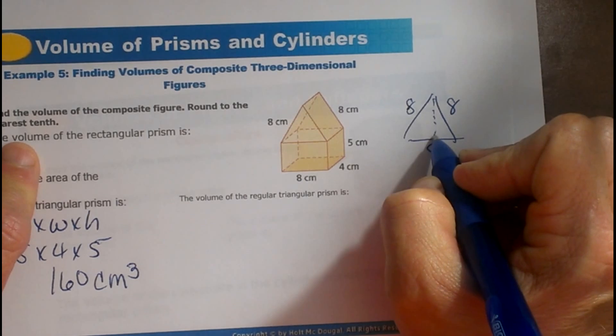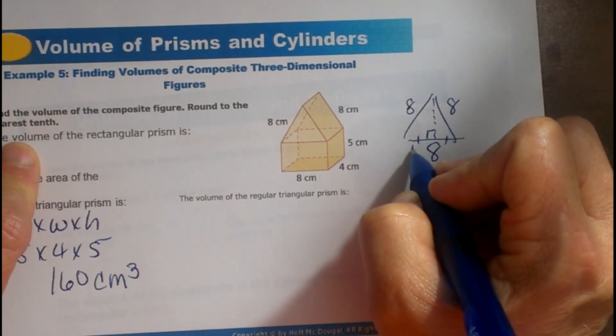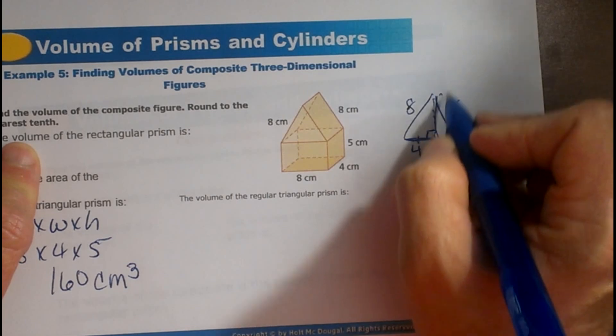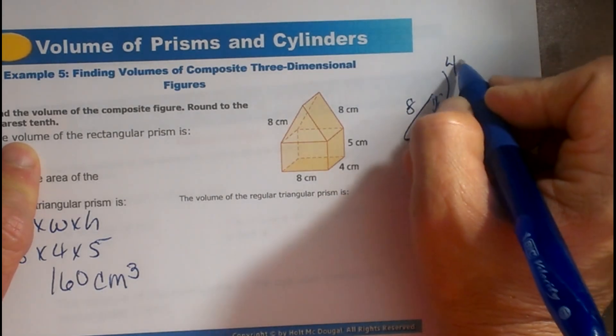So let's draw our altitude down. We know that cuts that into 4 and 4. And remember the rule: this is the short leg, this is the long leg. So that is 4 square root 3.